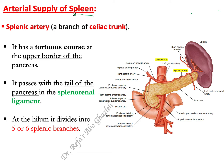The spleen gets its supply mainly from the splenic artery, which is a branch of the celiac trunk. The celiac trunk arises from the abdominal aorta and is one of the three anterior branches of the aorta. The splenic artery is one of the main branches of the celiac trunk.